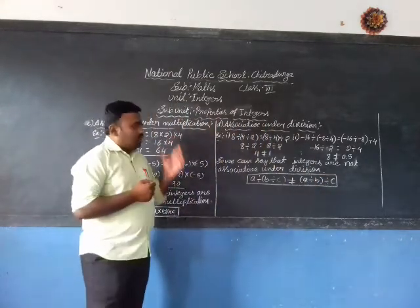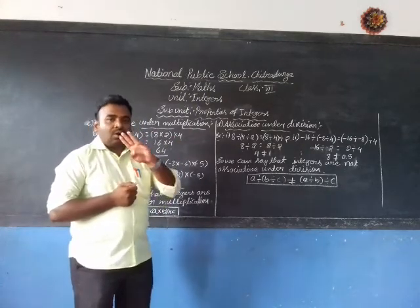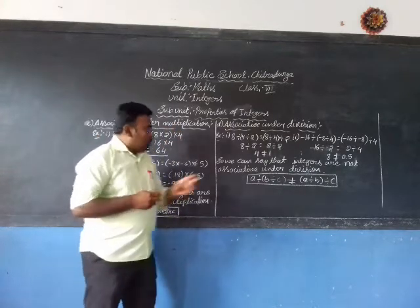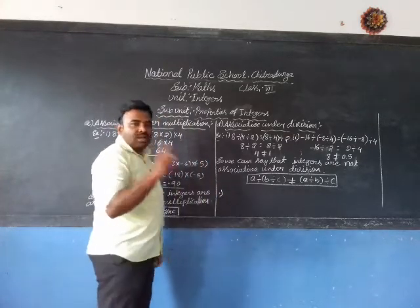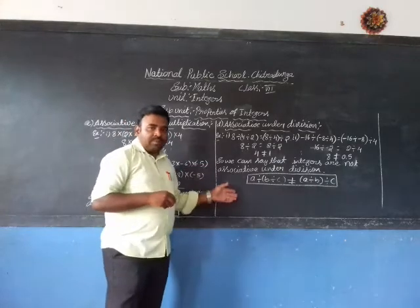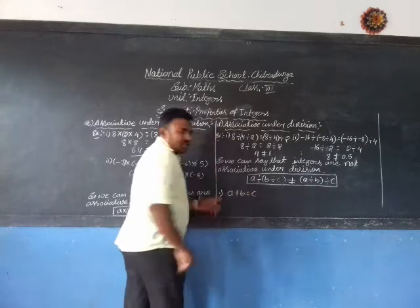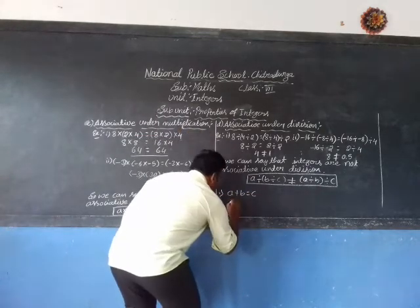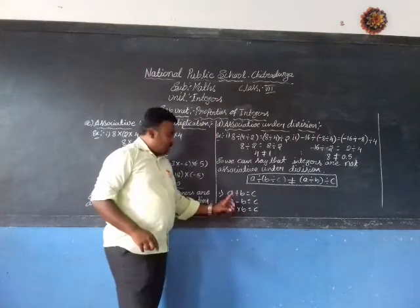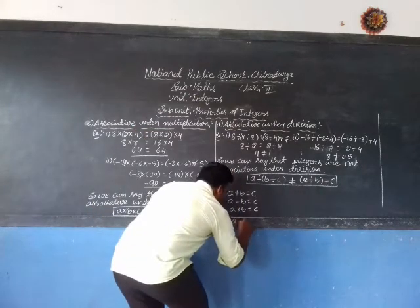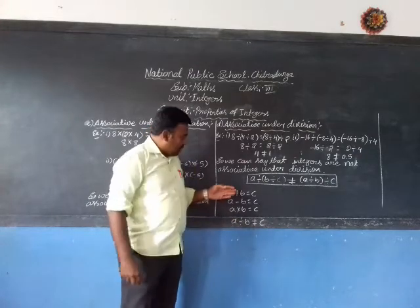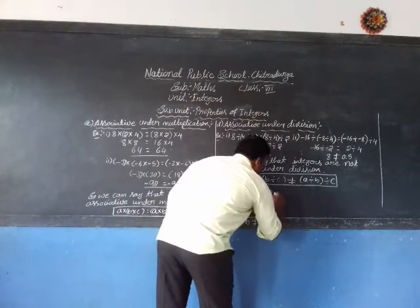This completes associative property. Now I will briefly explain all three properties. First: closure property. Integers are closed under addition, subtraction, and multiplication, but integers are not closed under division. That is: A + B = C (closed under addition), A − B = C (closed under subtraction), A × B = C (closed under multiplication), but A ÷ B ≠ C (not closed under division).